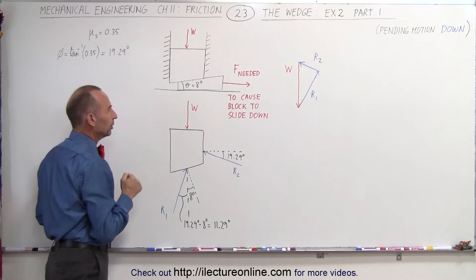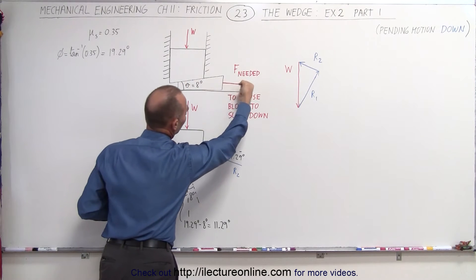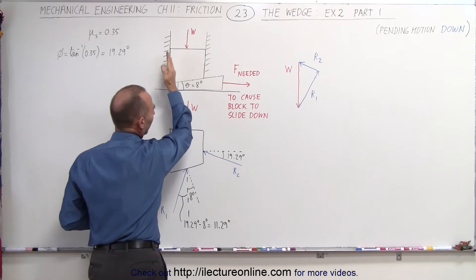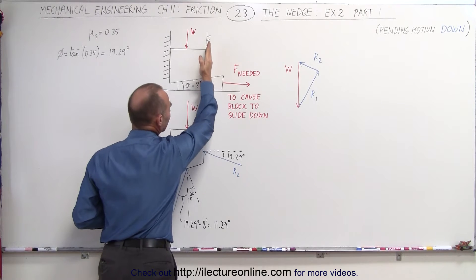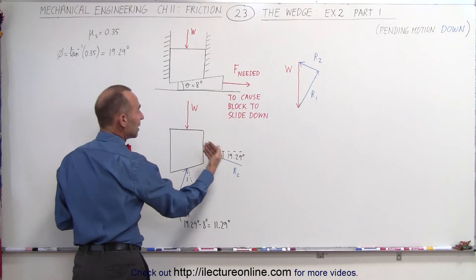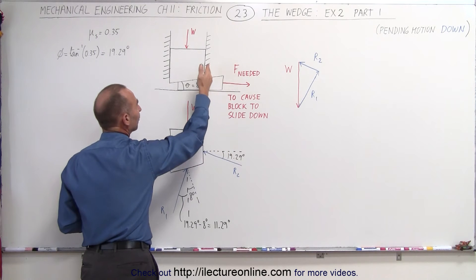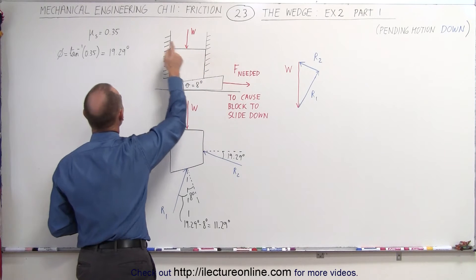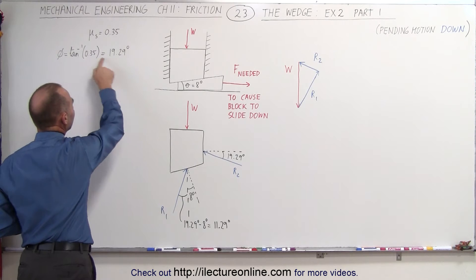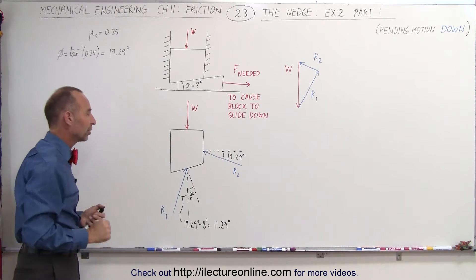We have the weight of the block pushing downward. Since we're going to be applying a force on the wedge trying to pull it out, the friction between the wedge and the block will cause the block to slide into the wall, and there will be a reactionary force there. That reactionary force is the sum of the normal force and the friction force between the wall and the block. The coefficient of static friction is 0.35, and the angle between the normal and the reaction force will be 19.29 degrees.